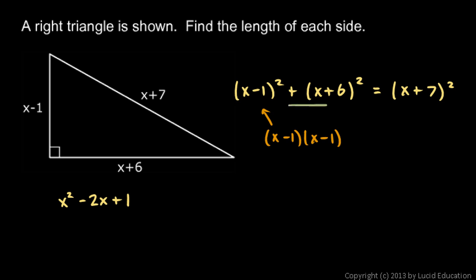And then we have plus all of this, so I'll write plus. And this, x plus 6 squared, remember that's going to be x plus 6 times x plus 6, and you do a FOIL there. That works out to x squared plus 12x plus 36.